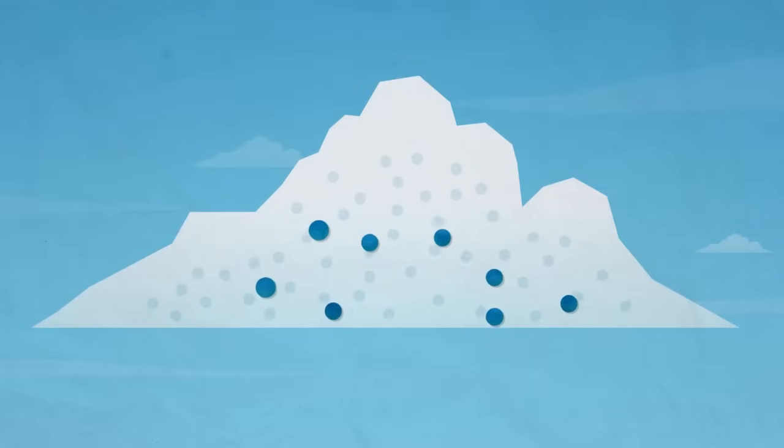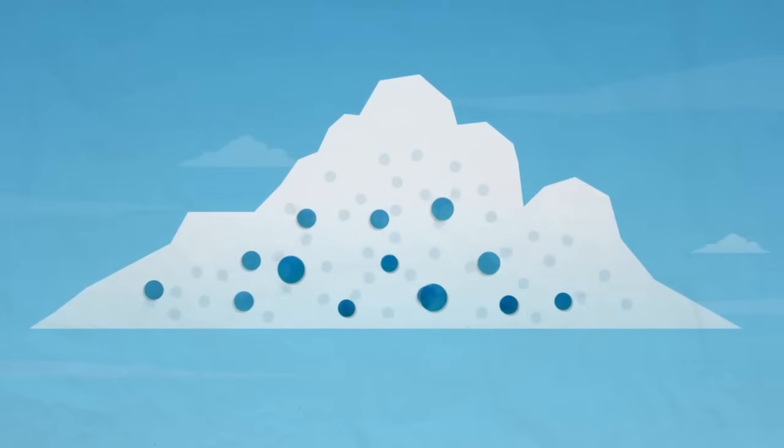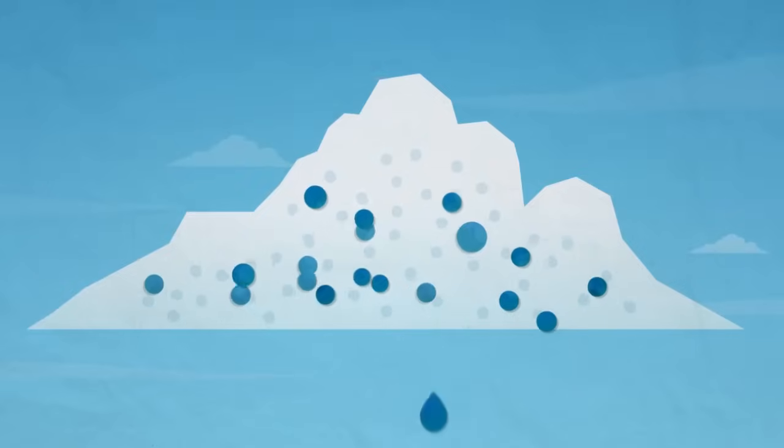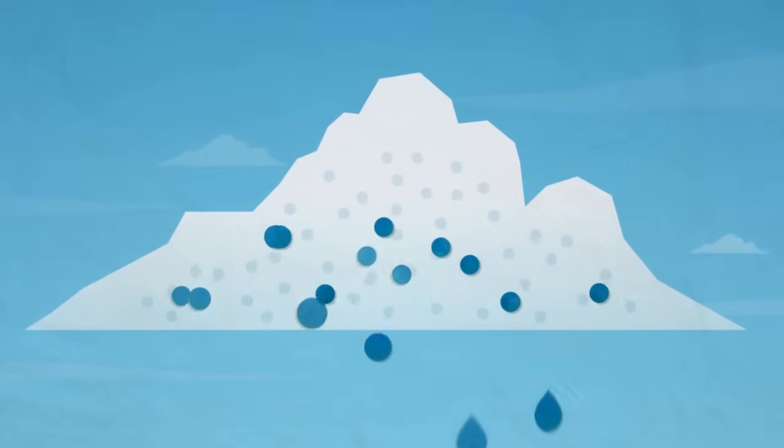When water droplets bump into one another, they stick together and grow in size. They continue to grow until they are too heavy and fall as rain.